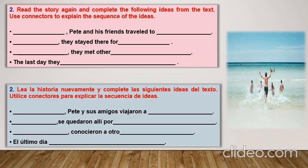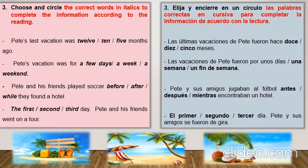Aquí ustedes tienen que escribir en los espacios en blanco los conectores como se indica. A continuación se muestran cuatro oraciones y cada una tiene tres respuestas. Aquí van a encerrar en un círculo las palabras correctas. Por ejemplo, las últimas vacaciones de Pete fueron hace doce, diez o cinco meses. De las tres opciones, van a encerrar la correcta. Para esto, tienen que regresar a la lectura anterior para que encierren correctamente.